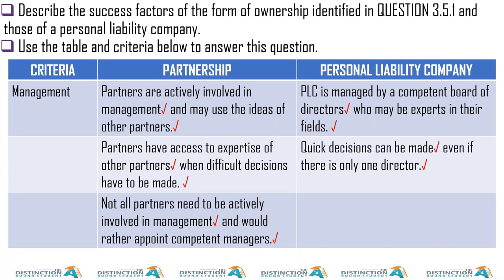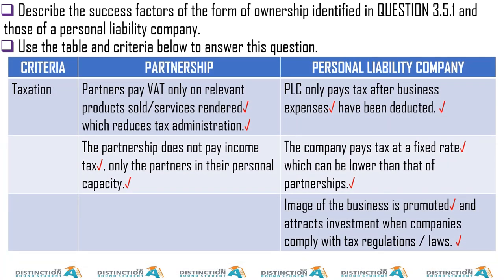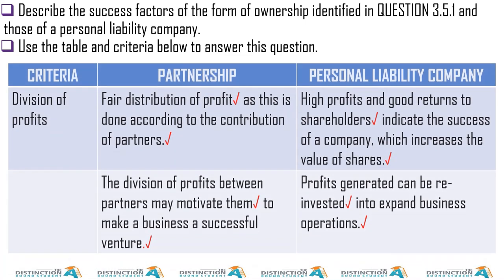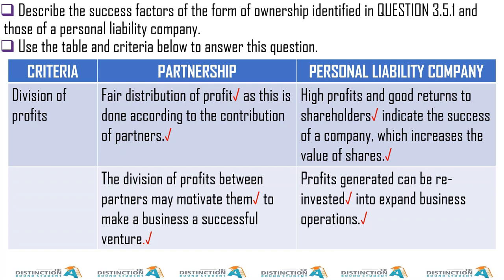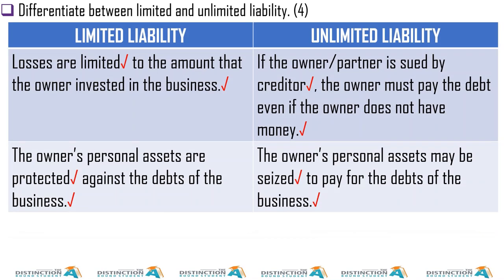Describe the success factors of the form of ownership identified and those of a personal liability company. So for management: compare partnership management to personal liability company management. You can pause and go through this. And then look at tax — compare tax for each. And then we have division of profits — pause and take some notes.